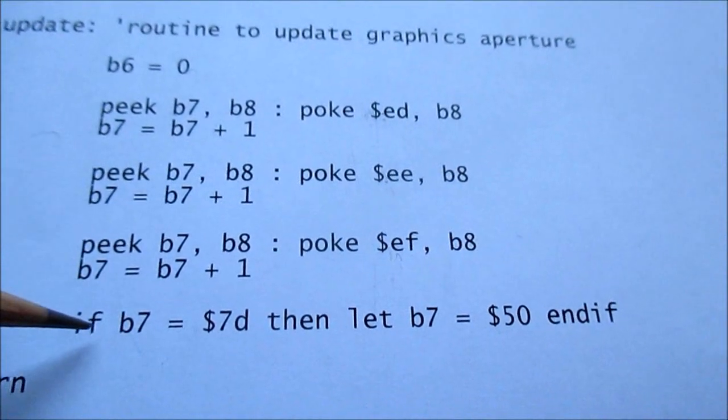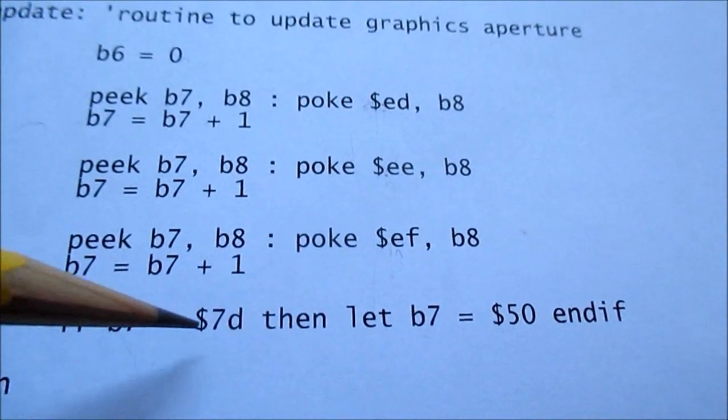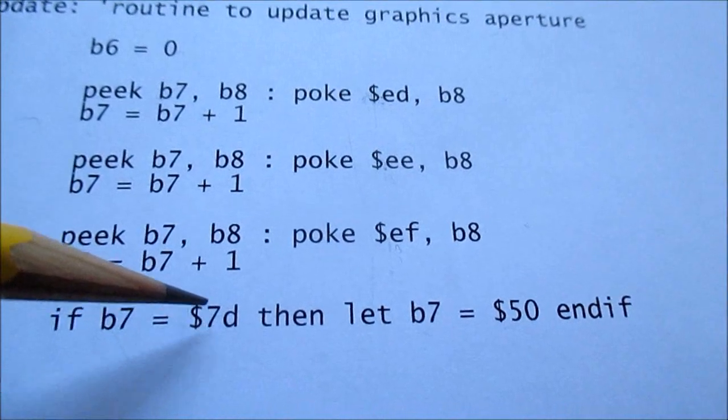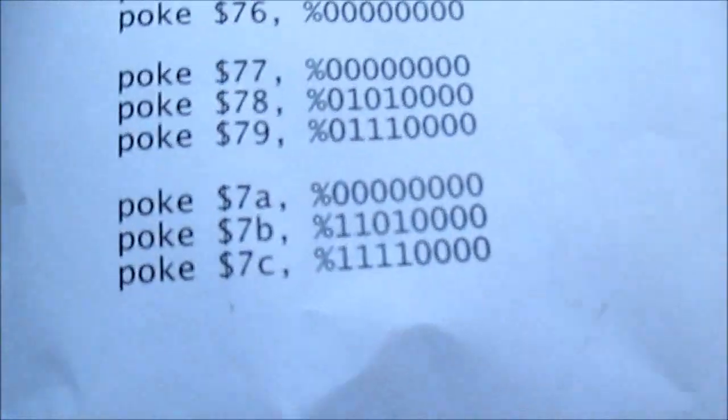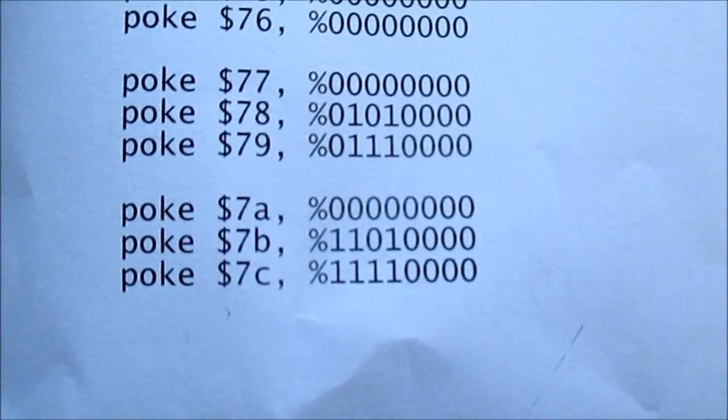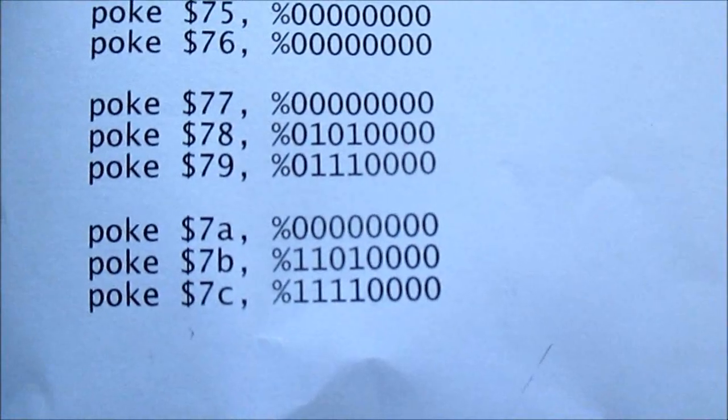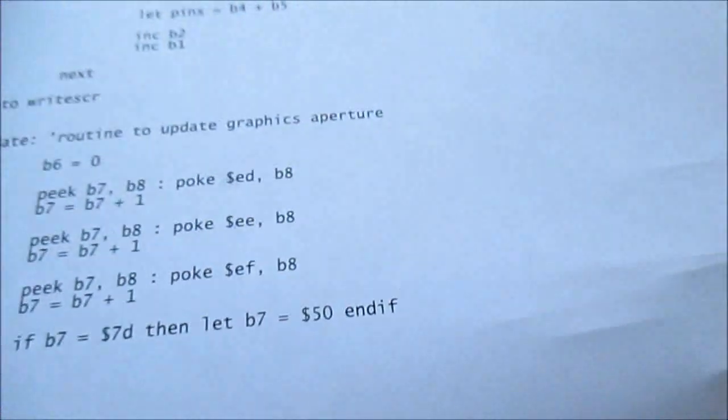So on, so forth for the third column. And then if B7 is this value, which was the highest, well just beyond the highest memory location for my bit patterns, it just resets because the program just loops around, starts over again.